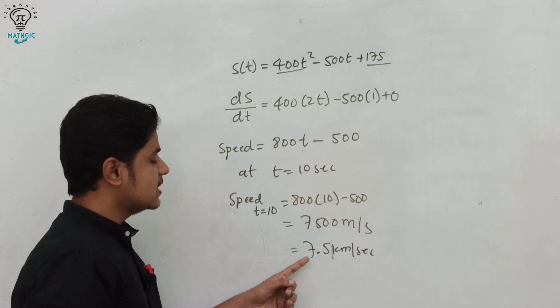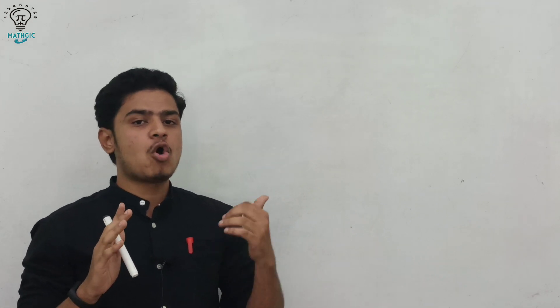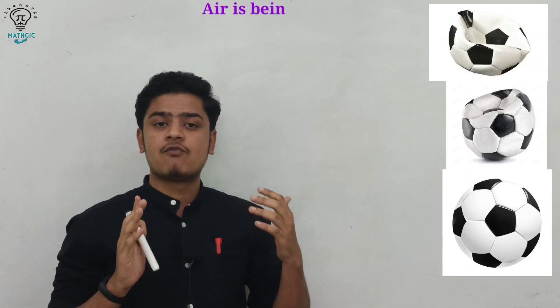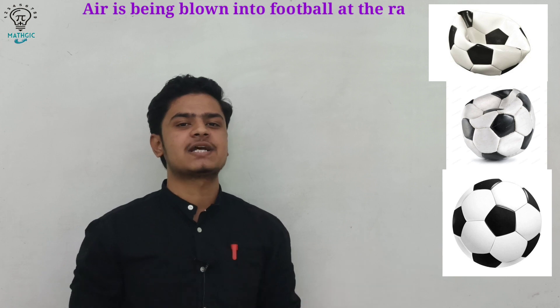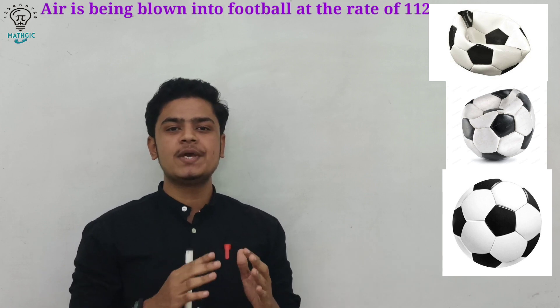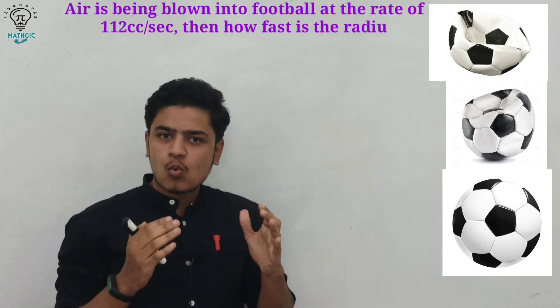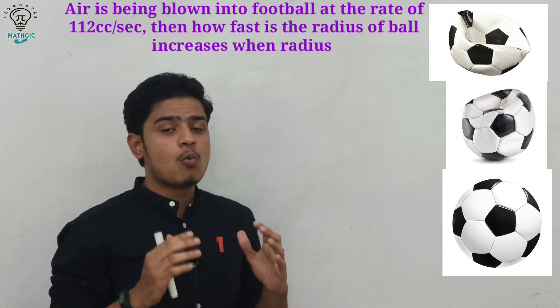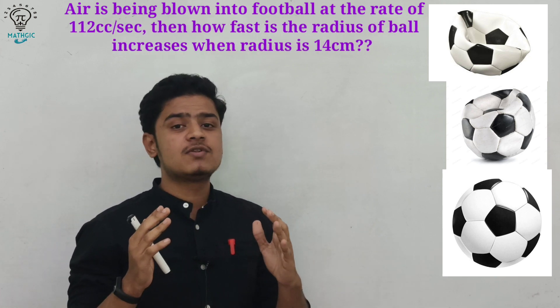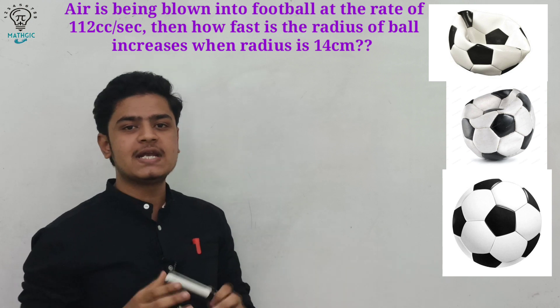Let's look at another problem. Air is being blown into a football at the rate of 112 cubic centimeters per second. We have to find at what rate the radius of the ball changes when the radius of the ball is 14 centimeters.